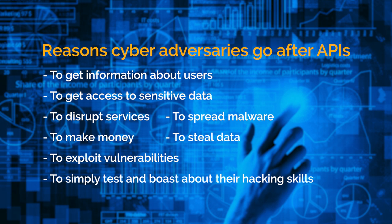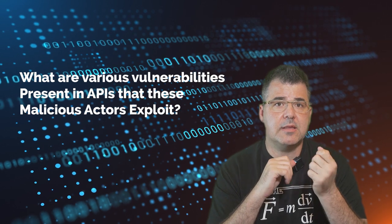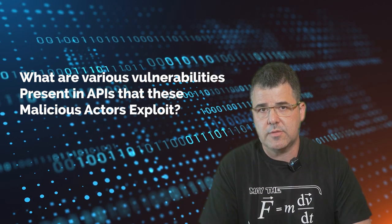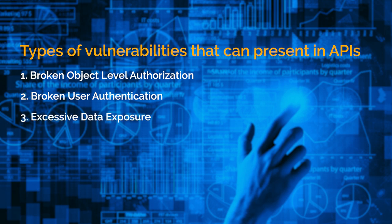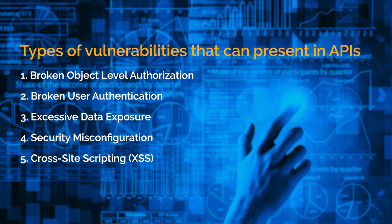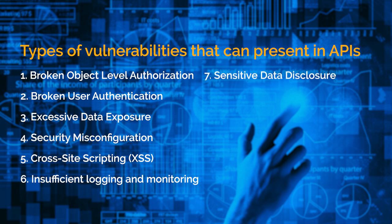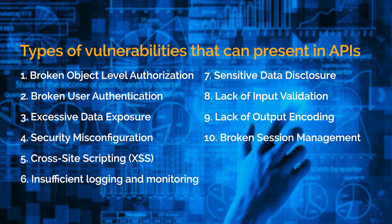So what are the various vulnerabilities present in the API that these malicious actors exploit? According to the OWASP organization, there are mainly ten types of vulnerabilities that can be present in APIs. The first one is broken object level authorization. The second is broken user authentication. The third is excessive data exposure. The fourth is security misconfiguration. The fifth, cross-site scripting or XSS. The sixth is insufficient logging and monitoring. The seventh is sensitive data disclosure. Eight, lack of input validation. Nine, lack of output encoding. Ten, broken session management. And I must add maybe one from my side, insufficient privilege escalation as the 11th.